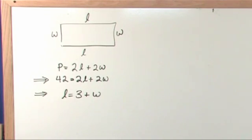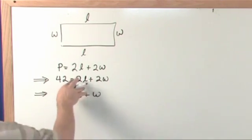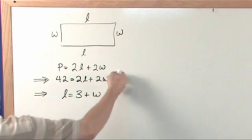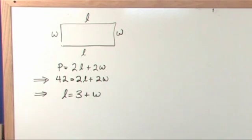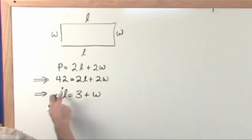Now notice I'm trying to find the dimensions of this rectangle which means I'm trying to find the length and the width. Now I've got two equations and two unknowns and that's exactly what I need to solve the problem. So let's proceed just as we have before.